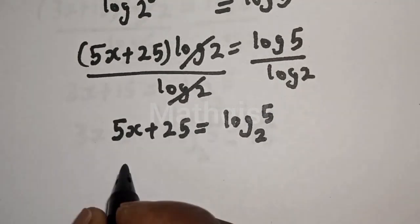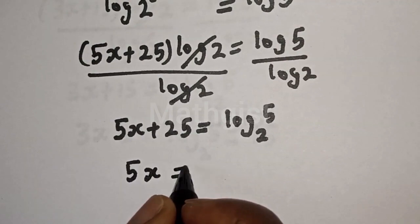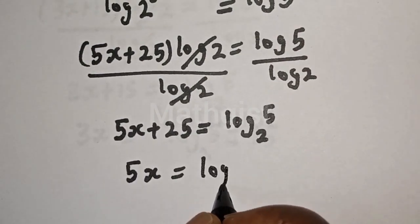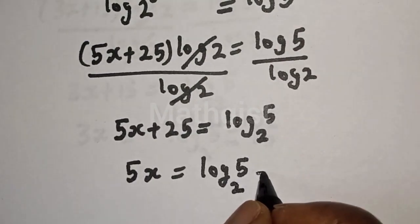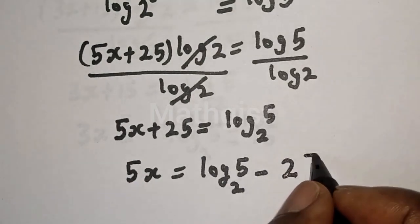So this is 5s is equal to log 5 base 2 minus 25.